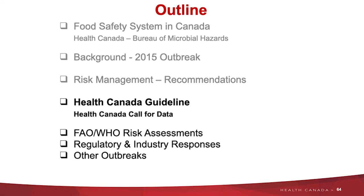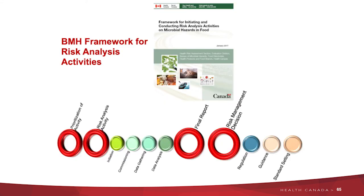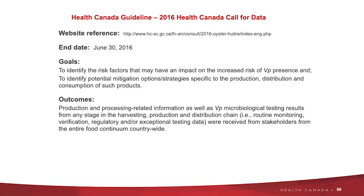At the Bureau of Microbial Hazards, we follow a framework for doing risk analysis. We have a risk management decision to make: do we regulate, do we provide guidance, or do we set a standard? When we do the risk analysis activity, we do some data gathering in a very formal way. We conduct what is known as a call for data — the first one we did in 2016. We wanted to identify within the food continuum factors that may impact the presence of Vibrio, as well as identify potential mitigation steps specific to the production, distribution, and consumption of these products.